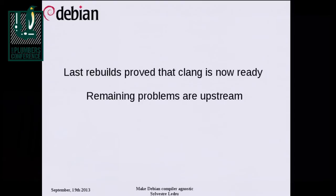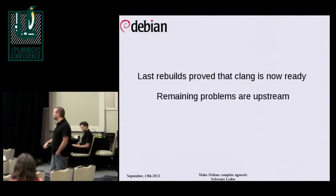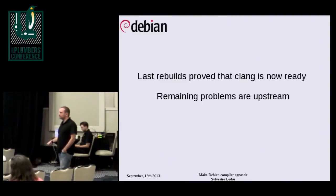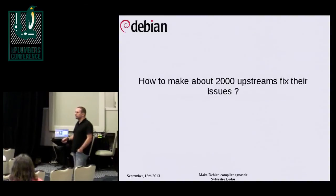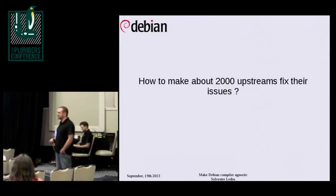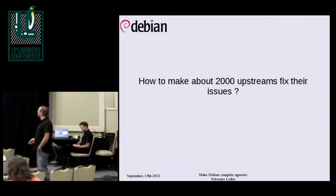From my point of view, the last rebuild of the Debian archive shows that Clang is now ready. I haven't found any bugs from Clang itself — I found many, many upstream bugs. So the main question now is how we can fix 2,000 upstream packages. I've got some time, but I don't want to do that myself — I'd like upstream to fix their own code.